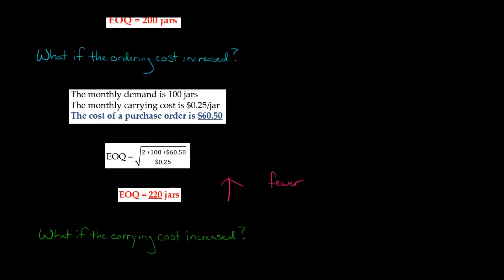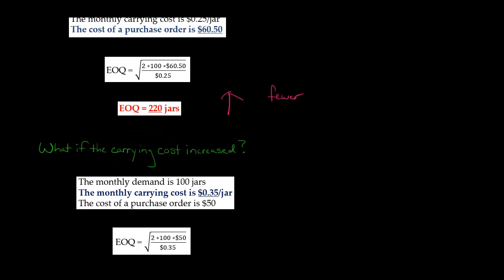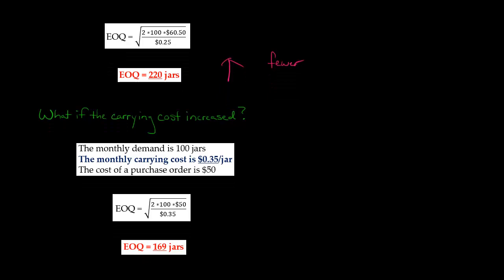What if instead the carrying cost increased? Going back to the original ordering cost of $50, let's say the carrying cost is now $0.35 a jar instead of $0.25, and the demand is the same. We plug the numbers back into our formula — everything's the same as the first problem, except now we've got $0.35 in the denominator. The economic order quantity comes out to 169 jars. In our original problem where it was $0.25 a jar, it had been 200 jars, and now it went down to 169.